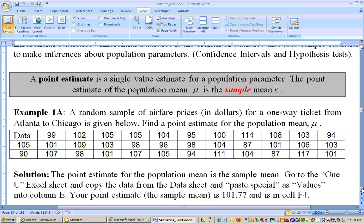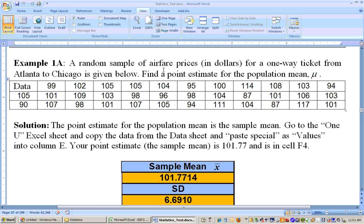Here's an example. A random sample of airfare prices in dollars for a one-way ticket from Atlanta to Chicago is given below. Find the point estimate for the population mean, mu. We're not only going to find the point estimate, but we're going to get everything on this, including the confidence interval. The point estimate would be for the population mean for all the airfare prices, which would be mu. We don't know all the airfare prices. We only have about 30 of them right here. So when we get the sample mean for these numbers, that's going to be our point estimate.